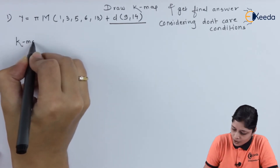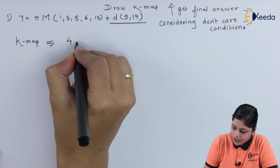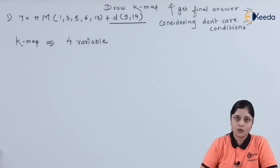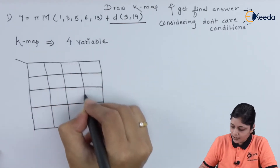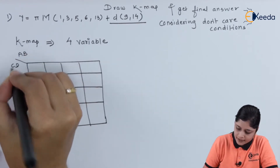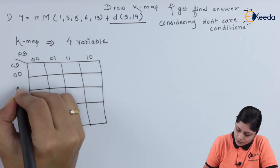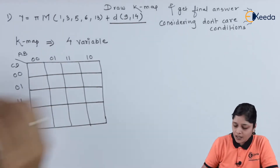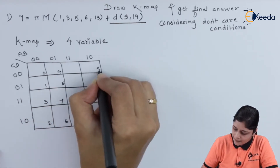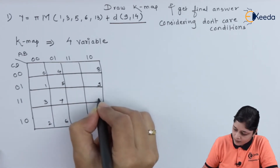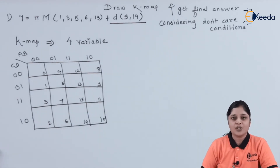We will focus on the Kmap. Since 13 is present, a 4-variable Kmap is required. We will draw a 4-variable Kmap with variables a, b, c, and d. The Gray code sequences are written along the axes, and inside the boxes we number 0 through 15.